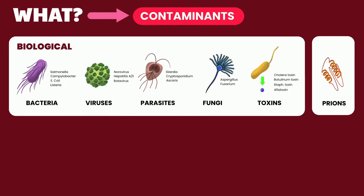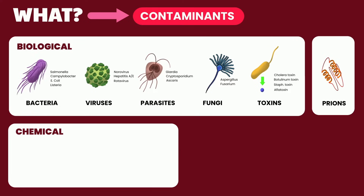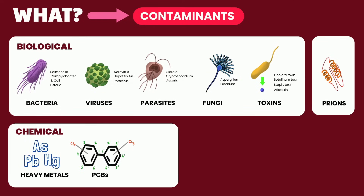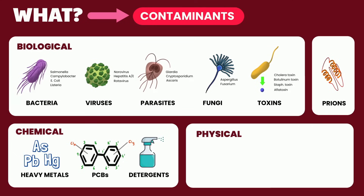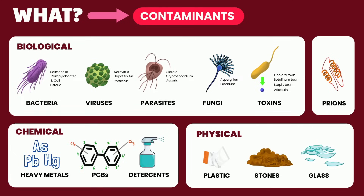Prions are protein molecules that have the potential to cause severe disease. Contamination could also be due to chemicals like heavy metals — for example, lead, mercury, or arsenic — or compounds such as polychlorinated biphenyls and detergents. Or physical contaminants such as plastics, stones, or glass.